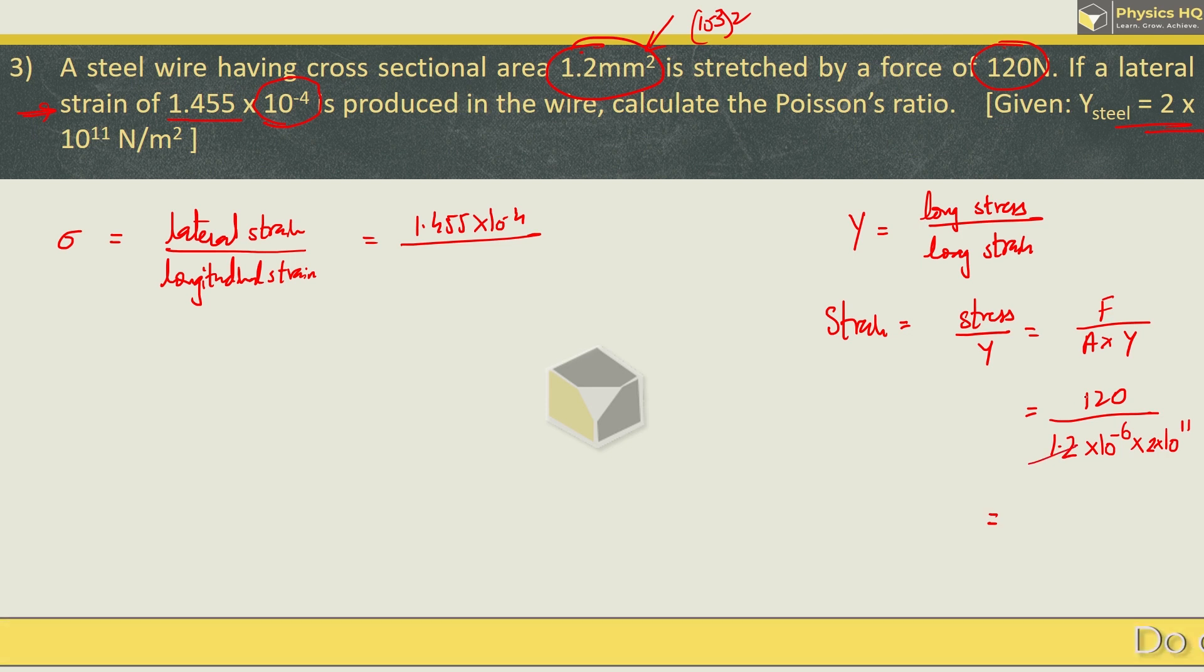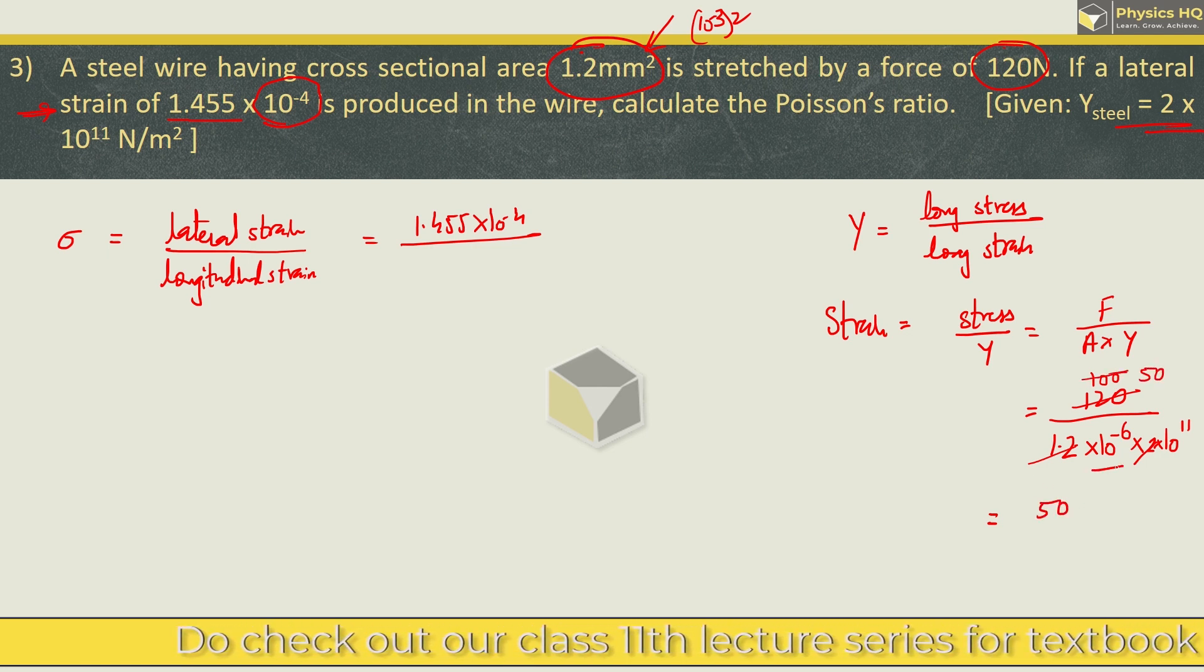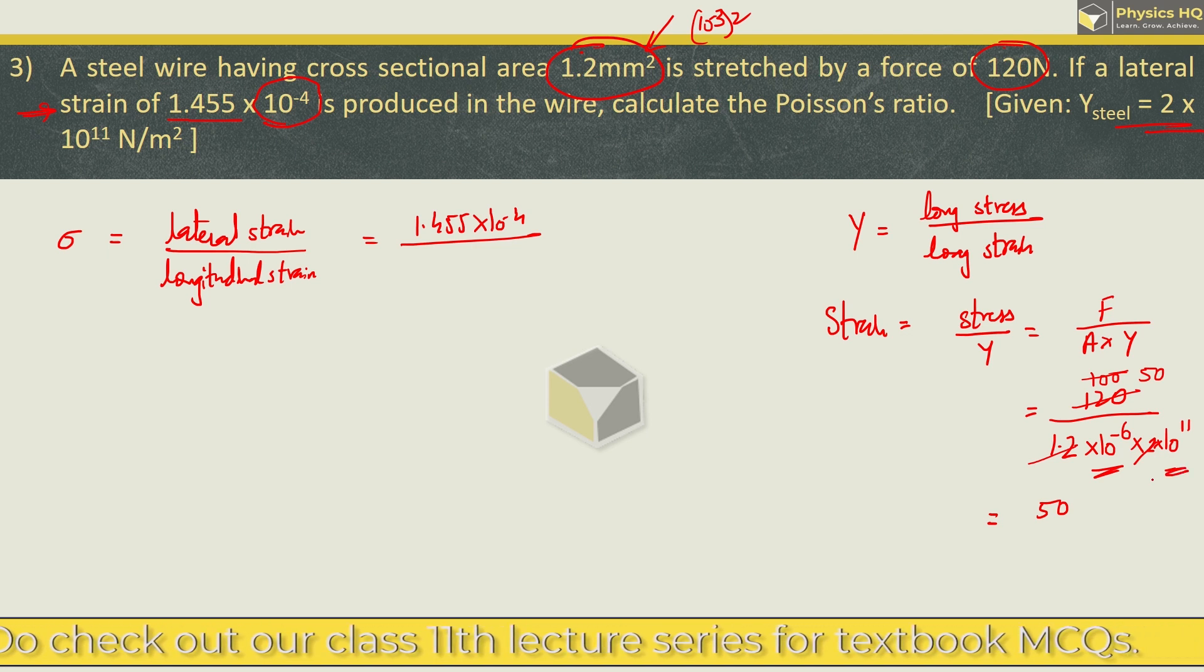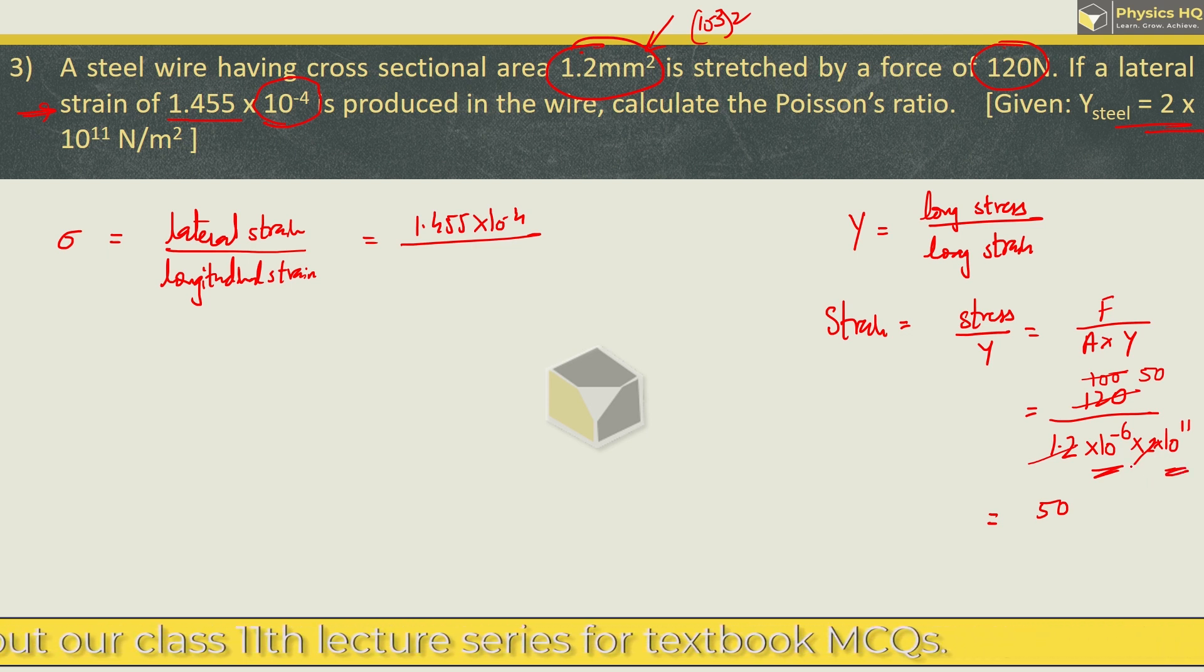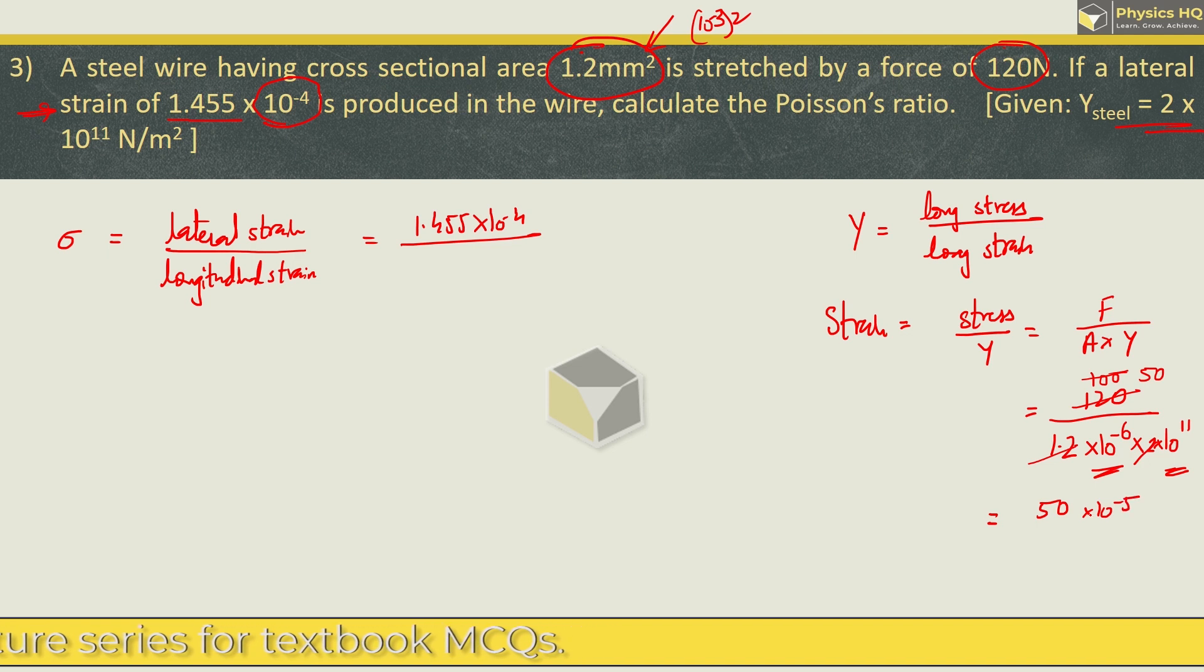Now 1.2 / 120 = 100, and 2 / 50. So we got 50. The denominator is 10^-6 and 10^11, which is 10^5. And the numerator is 10^-5. So this is 5 × 10^-4. Let us put it over here, 5 × 10^-4.